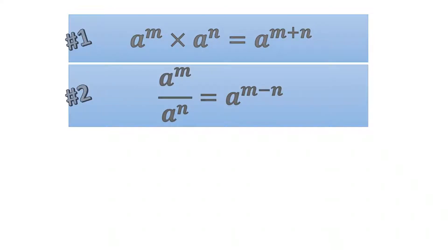Our second rule states that if the bases are the same and they are divided with different powers, then we subtract the powers from each other. So a to the power of m divided by a to the power of n equals a to the power of m minus n.